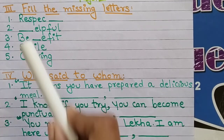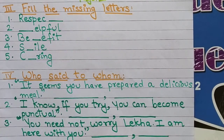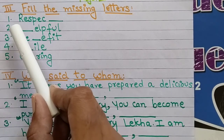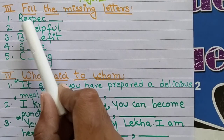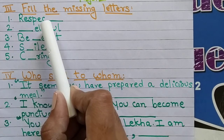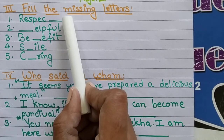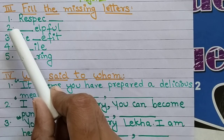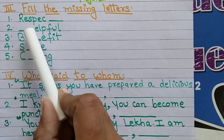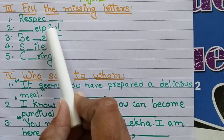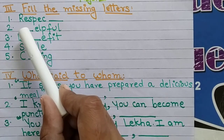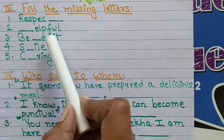Next section is fill the missing letters. Yahan pe letters miss kar rahe hain, aapko unko fill karna hai. First one: R, E, S, P, E, C, dash — yahan pe kya missing hai? Aapko yahan pe fill karna hai. Second: dash, E, L, P, F, U, L — yahan pe kya missing hai? Aap fill karoge.